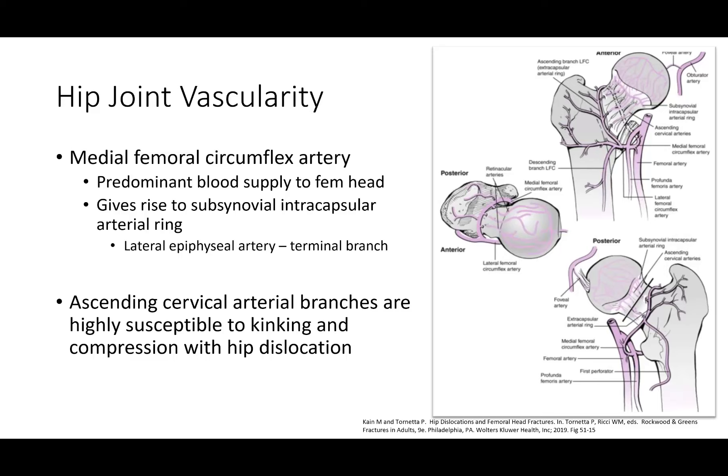Regarding vascularity, the medial femoral circumflex artery gives rise to the subsynovial intercapsular arterial ring, including the lateral epiphyseal artery and its terminal branch. The ascending cervical arterial branches are highly susceptible to kinking and compression with hip dislocation. This is what can potentially lead to ischemia if you leave a hip dislocated.